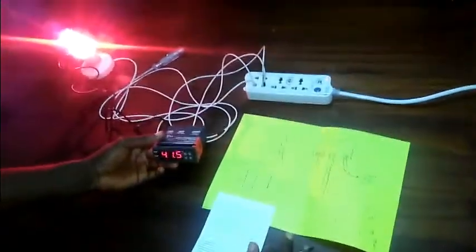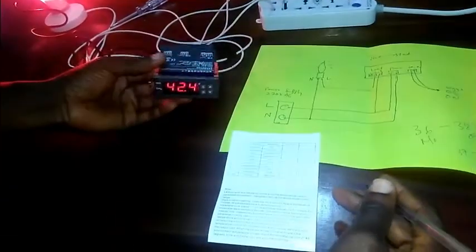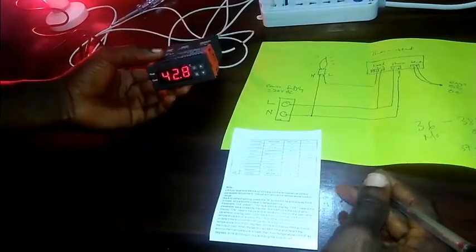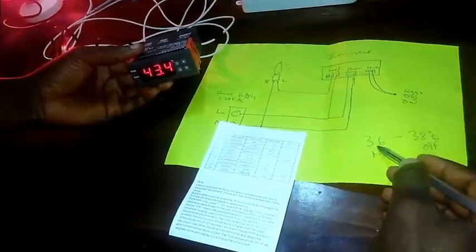Alright guys, so the thermostat is working perfectly. Now I want to take you through the settings, how to set the thermostat to get what you want. For example, we want to maintain a temperature between 36 and 38 degrees.